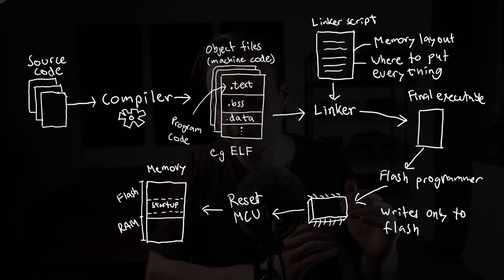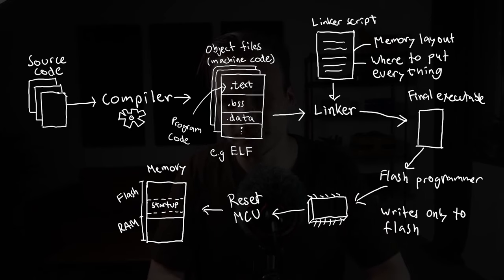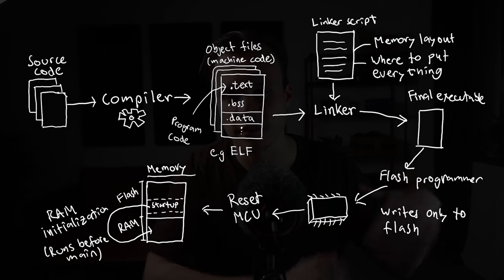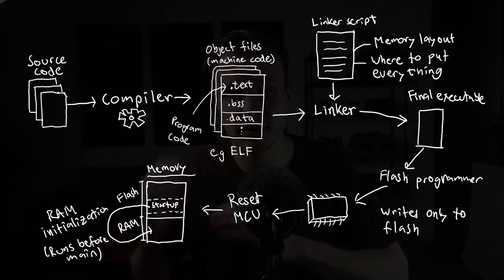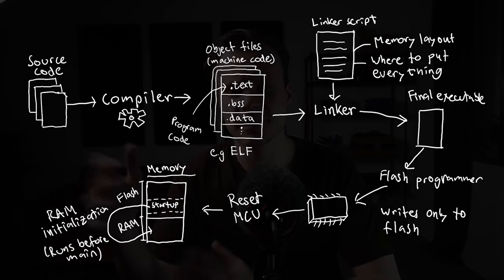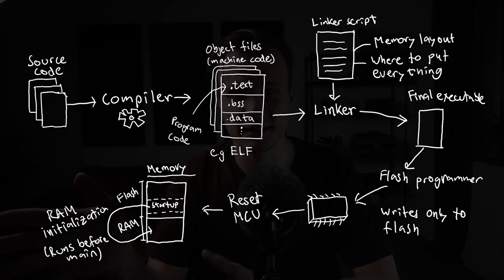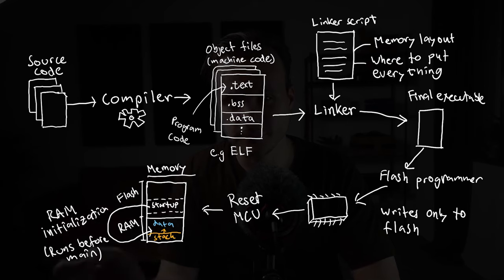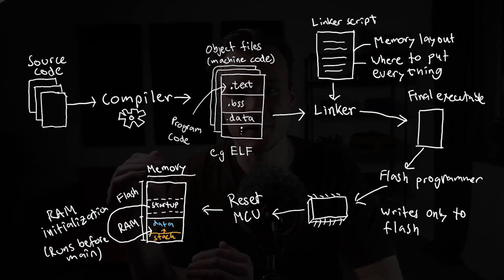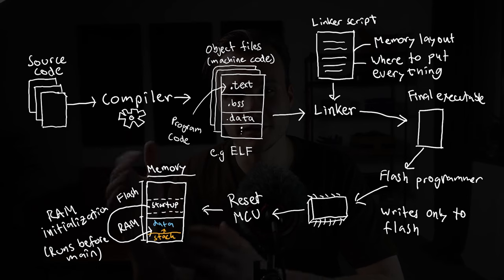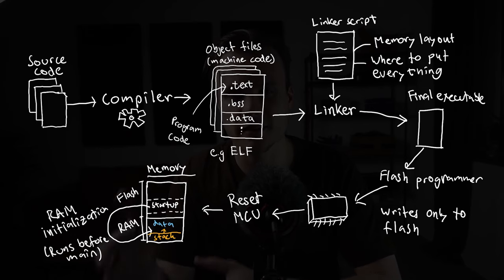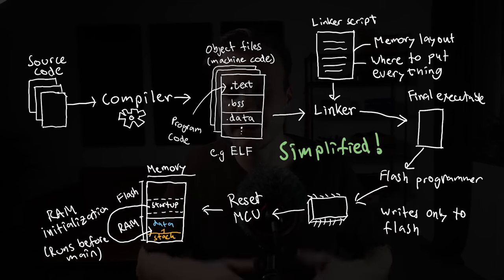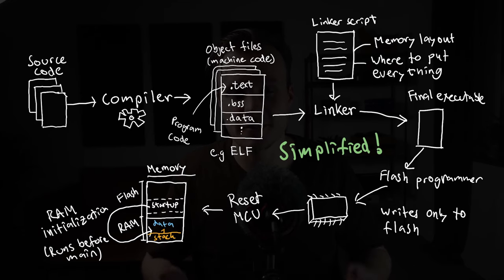Among other things, a big part of the startup code is to initialize the RAM. So if we have any global variables initialized with some values, it's going to set those up inside the RAM. It also zero-initializes any global variables that are not initialized, and sets the stack pointer to initialize our stack — which is the section of memory used for storing the context of a function. Of course, this is a very simplified explanation, but I think it's enough to understand the code example I'm going to show you.